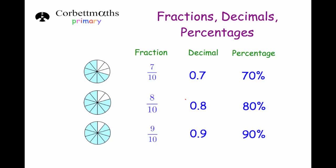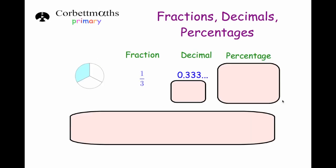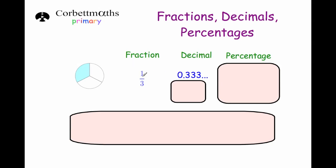Finally, we've looked at halves, quarters, fifths, and tenths — now we're going to look at thirds. Thirds are quite interesting. This diagram represents one third, with one of three sections shaded in. If you do 1 divided by 3 using the bus shelter method, you get 0.33333333, going on forever. It's called a recurring decimal, and it goes on forever: 0.33333333.